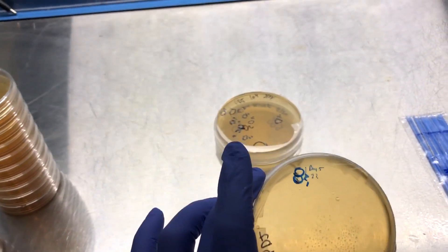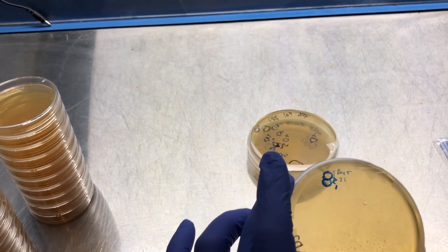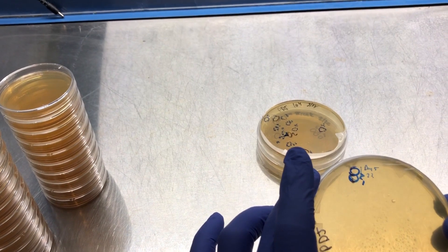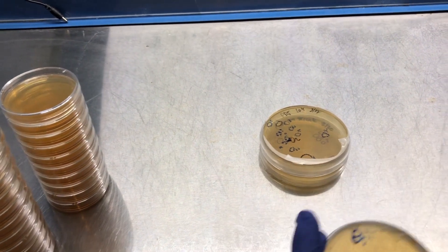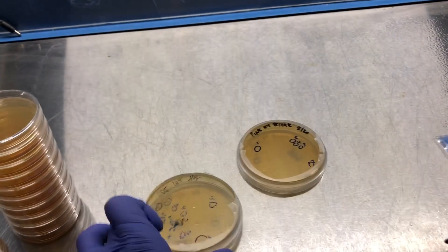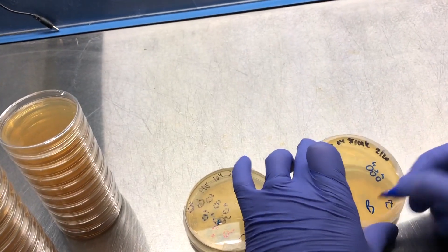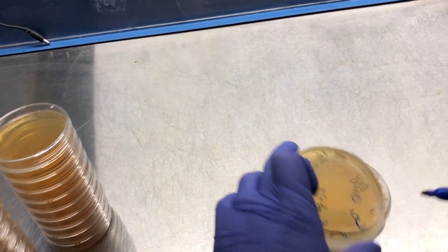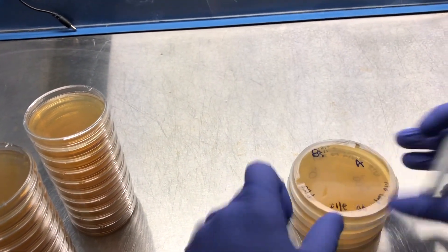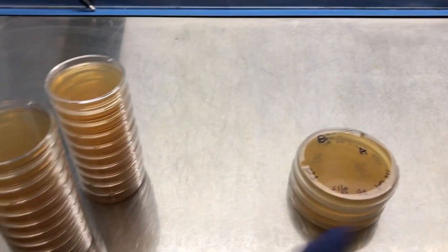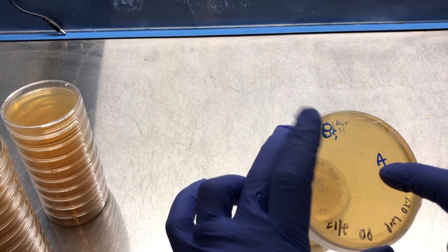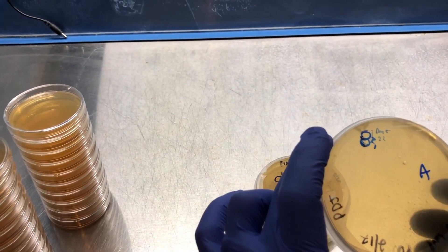And since they're a little bit smaller and clustered together, I'm going to use my sterile inoculation loops. So I'm going to label my plates A, B, and C according to cleanliness.